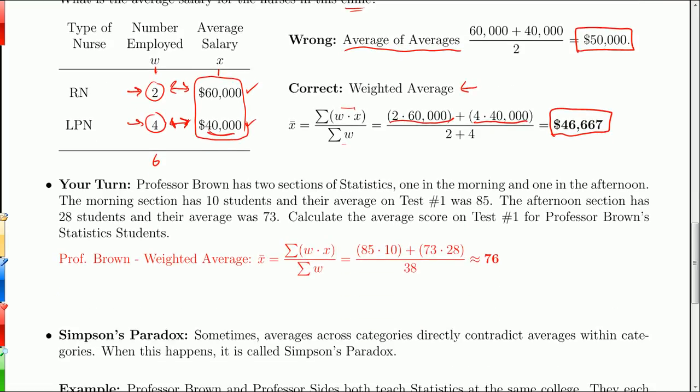Here's your turn problem. Professor Brown has two sections of statistics, one in the morning, one in the afternoon. The morning section has 10 students. And the average on test one was 85. The afternoon section had 28 students. And the average was 73. So we look at these averages and we know we don't want to average the averages. We know we don't want to take 73 plus 85 divided by 2 because that's going to give us the average of those two numbers. But there are a lot more students in that afternoon class, which had the 73. So that's going to bring the average down below just the mean of those two numbers.